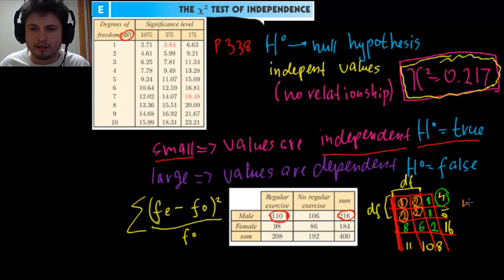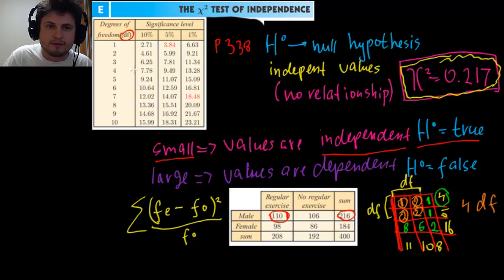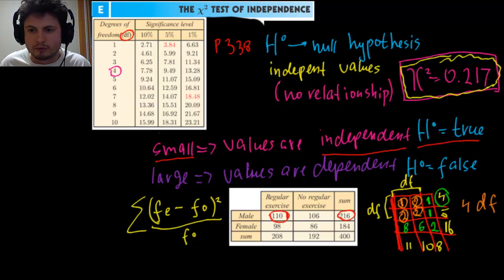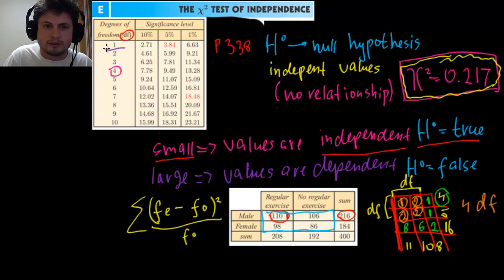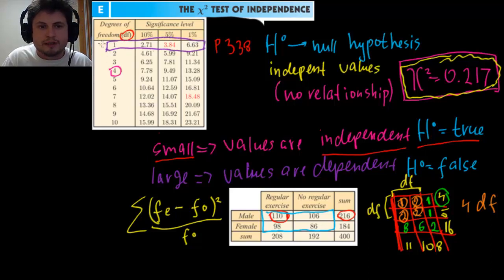That three-by-three table has four degrees of freedom. But for the smaller exercise table with male and female — which has only four cells — once you select one number, the rest are pre-selected because the sums must equal 208 and 216. So this table has only one degree of freedom; we're only looking at that one free cell.